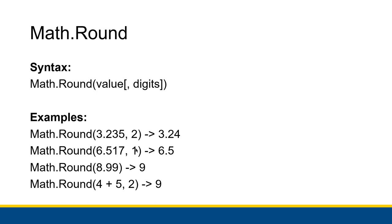Math.Round, you can pass in one digit. So one digit for 6.517 would be 6.5. If it was 6.58, it would become 6.6. It can also give more digits than actually exist in the input. So Math.Round 4 plus 5 rounded to two digits would be the number 9.